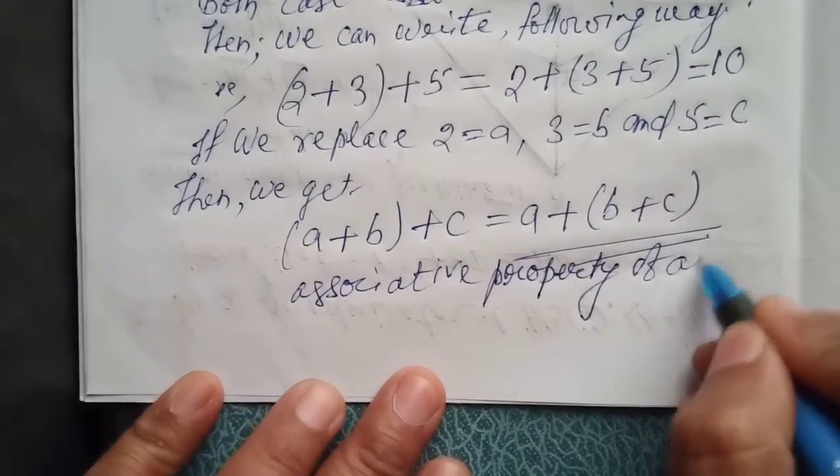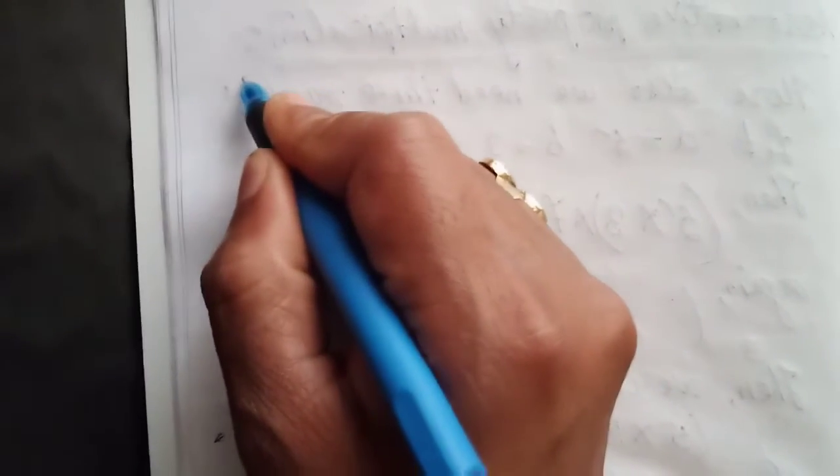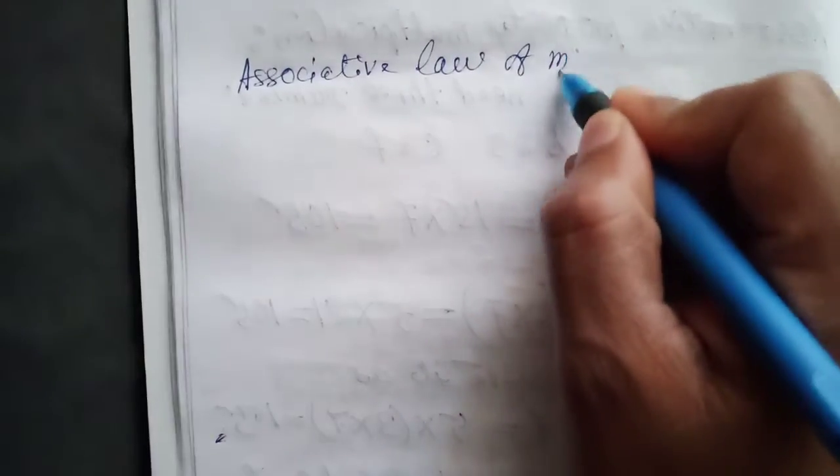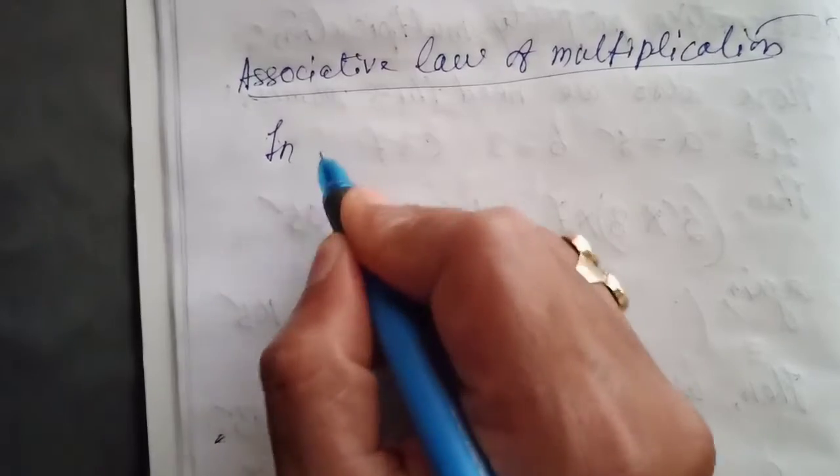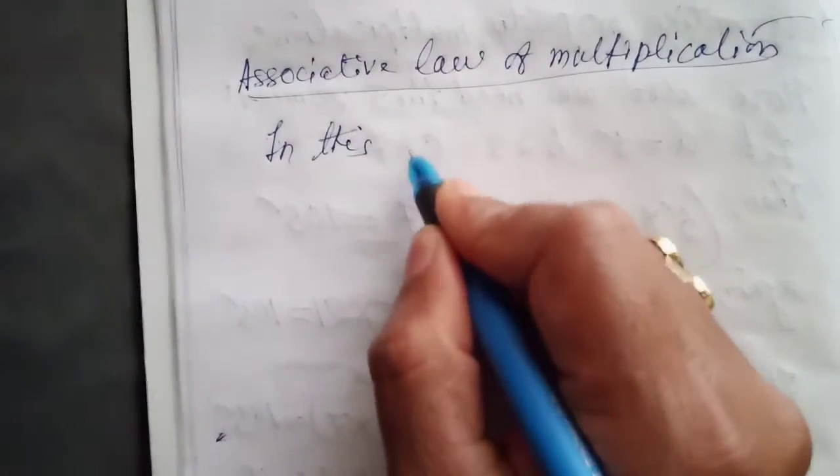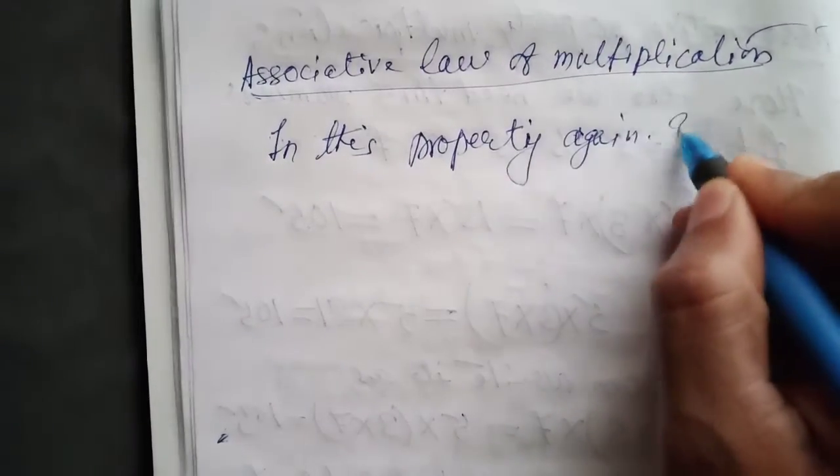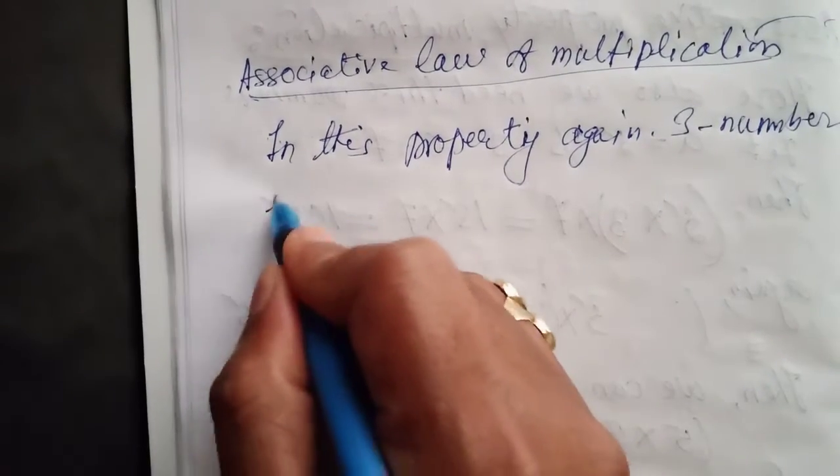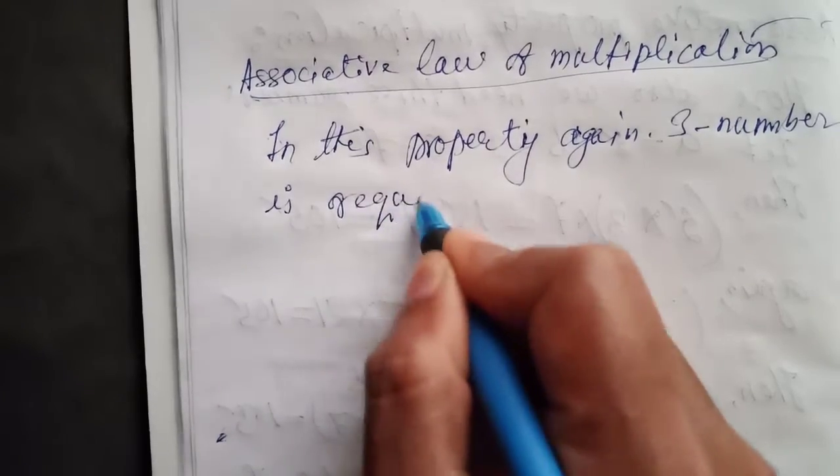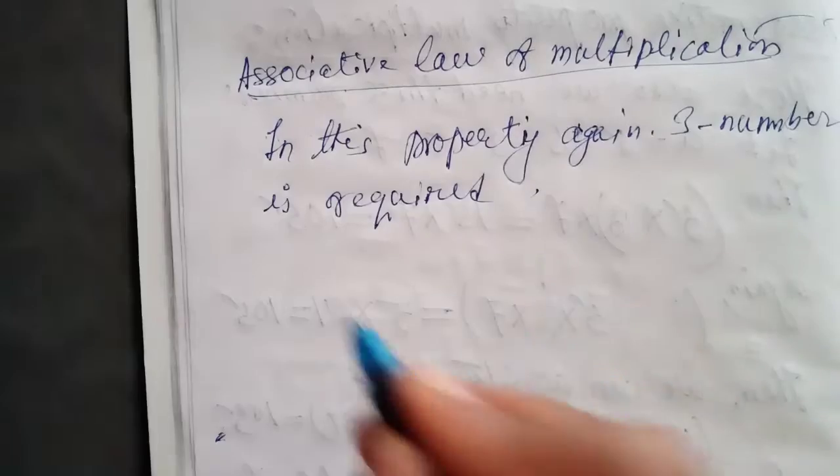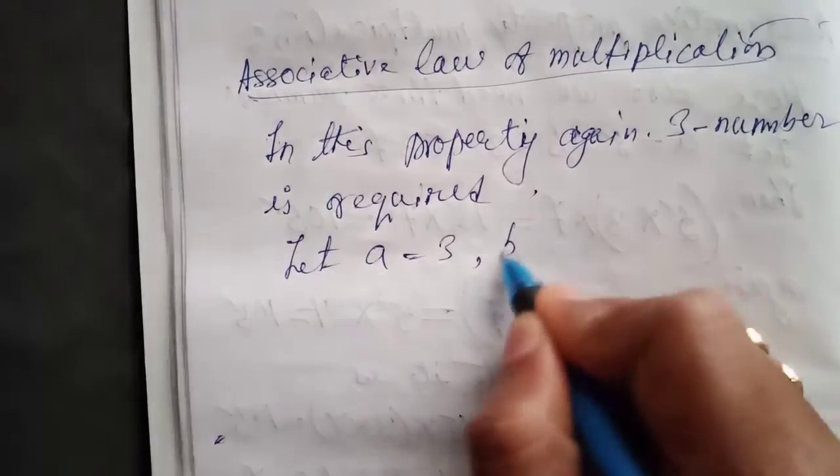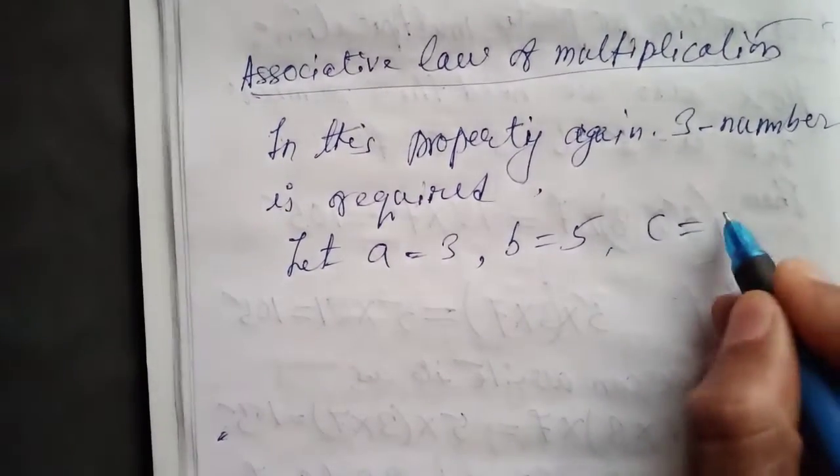Okay, now the associative law of multiplication. In this property, again three numbers are required. Let a equal 3, b equal 5, and c equal 7.